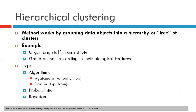Hierarchical clustering methods work by grouping data objects into a tree-like structure or a hierarchy of clusters. There are various types, like algorithmic, globalistic, and Bayesian clustering methods. Agglomerative clustering method is a type of algorithmic clustering method.